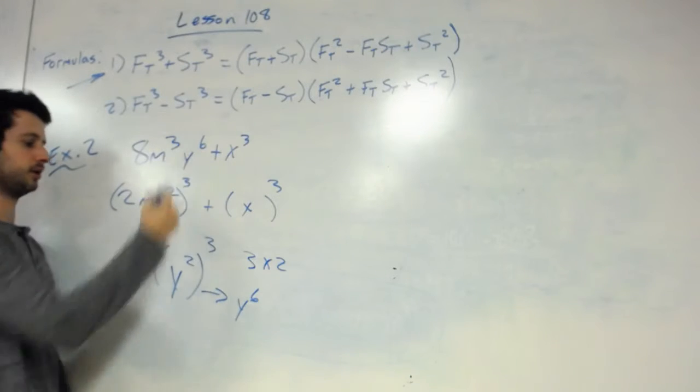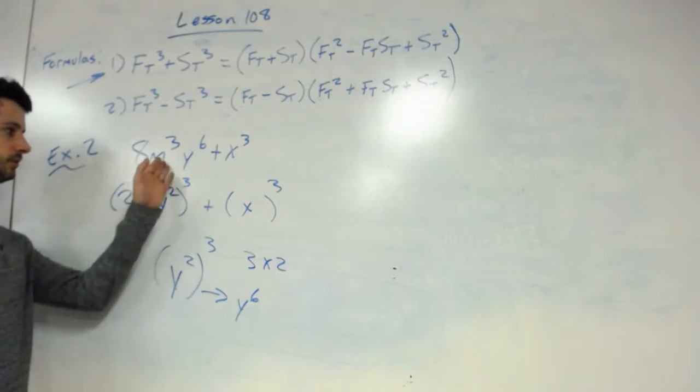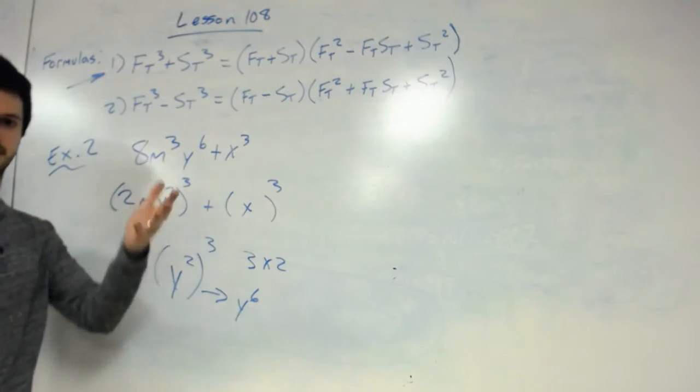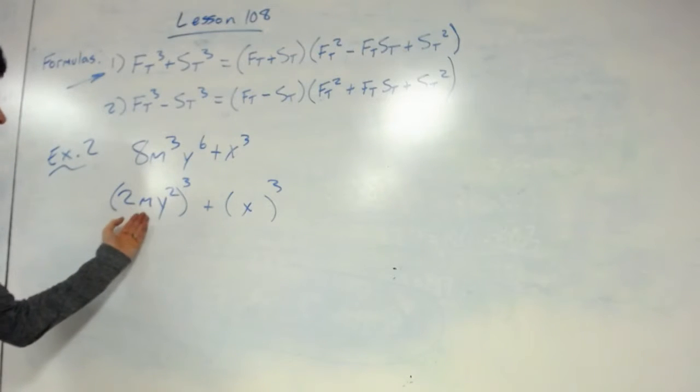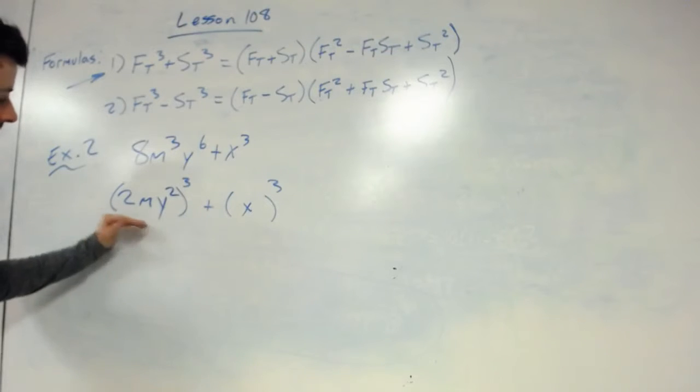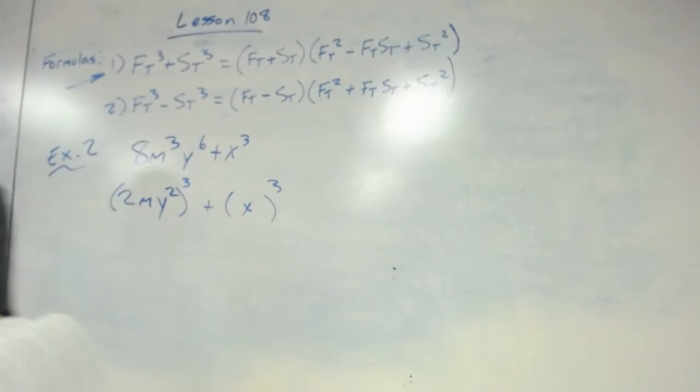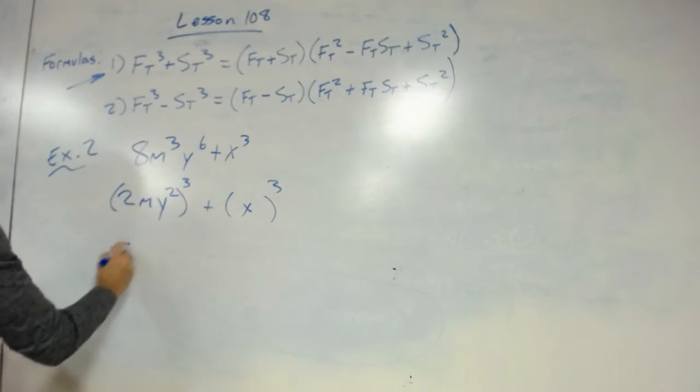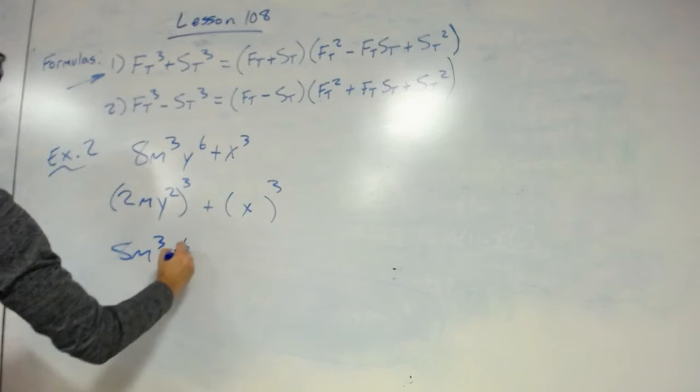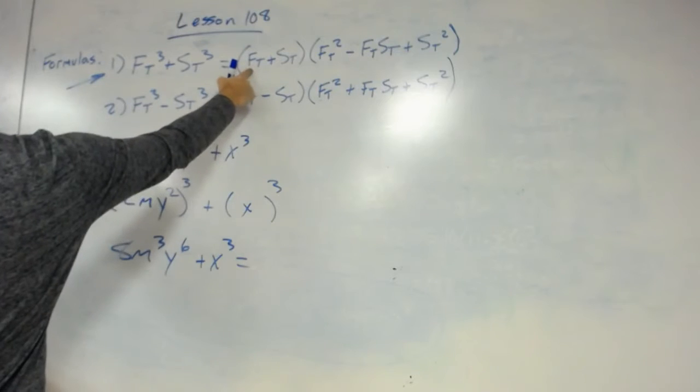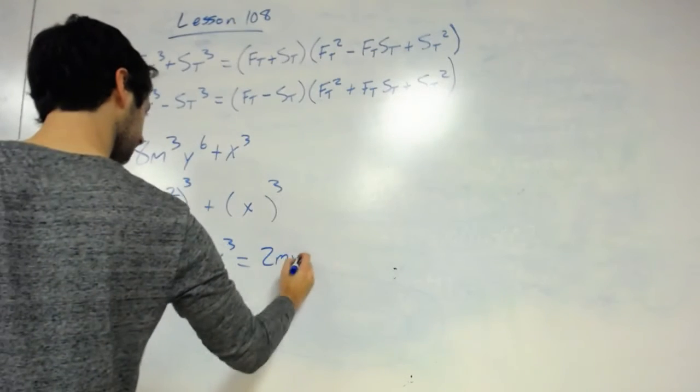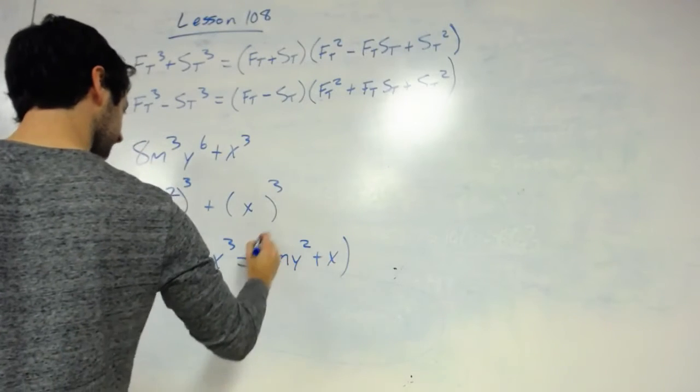So this would become y to the sixth. Notice y squared, y cubed, y to the sixth. So this cubed, or factored by the cube, ends up being 2 times m times y squared. Now we know our first thing and we know our second thing. So we simply start plugging into the formula. I am going to write the left side as the original equation, so 8m cubed, y to the sixth, plus x cubed equals. What's my first thing? My first thing is 2my squared. Second thing is x times.